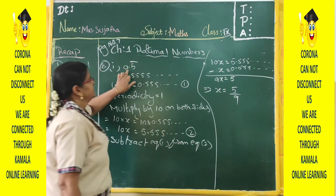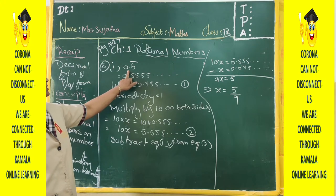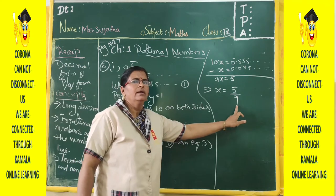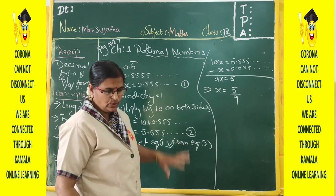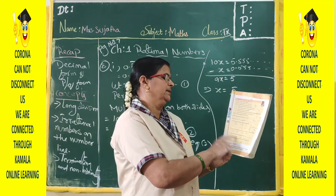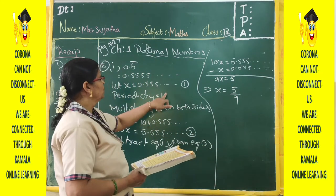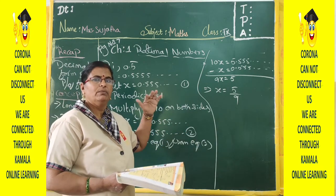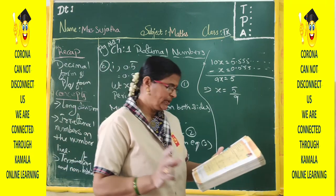This decimal 0.5 bar is a non-terminating repeating decimal, and you are changing it into p/q form — the answer is 5/9. The homework sum, 0.36 bar — here 36 has the bar, so periodicity is 2. Multiply by 100 and the decimal moves two places further. You can do it the same way.